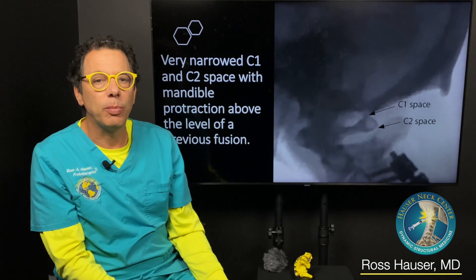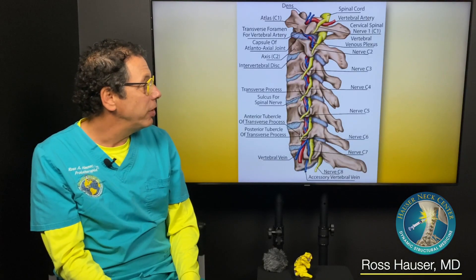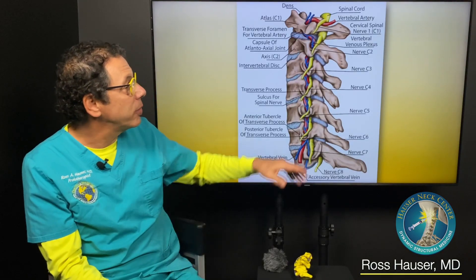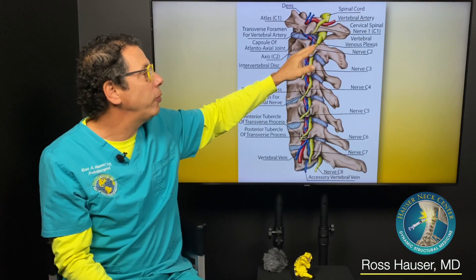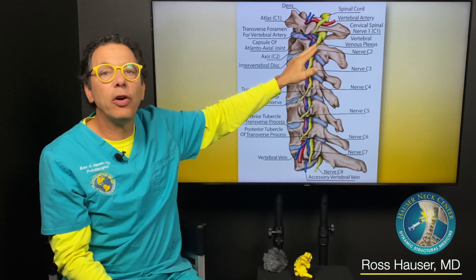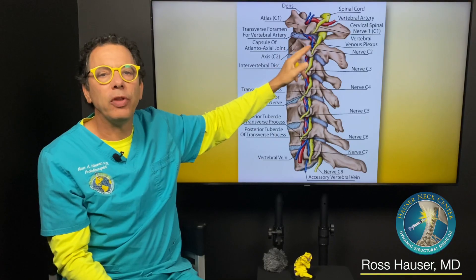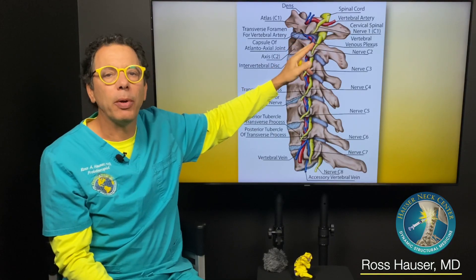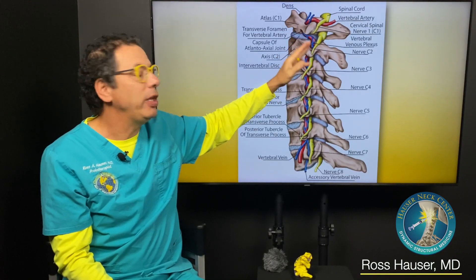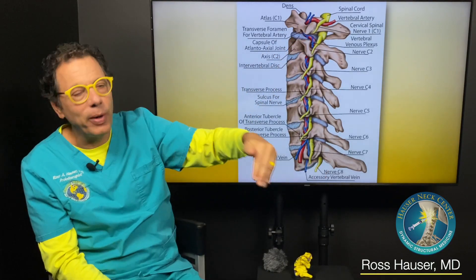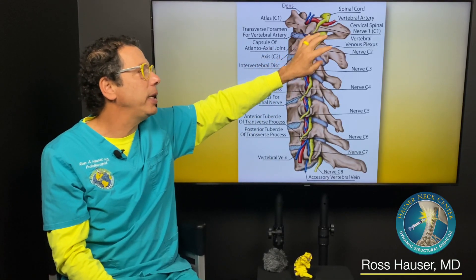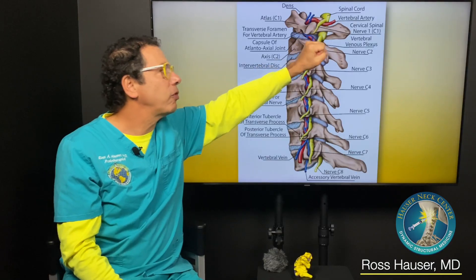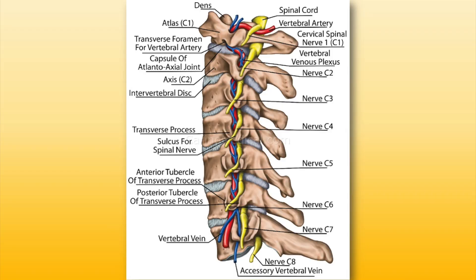The way we evaluate it is by digital motion x-ray. Here's the atlas, here's the axis — see the C2 nerve there? That's what forms the occipital nerve. So when you have chronic occipital neuralgia, it's likely you have a looseness of this joint. Then the muscles clamp down and the nerve gets stretched and compressed.